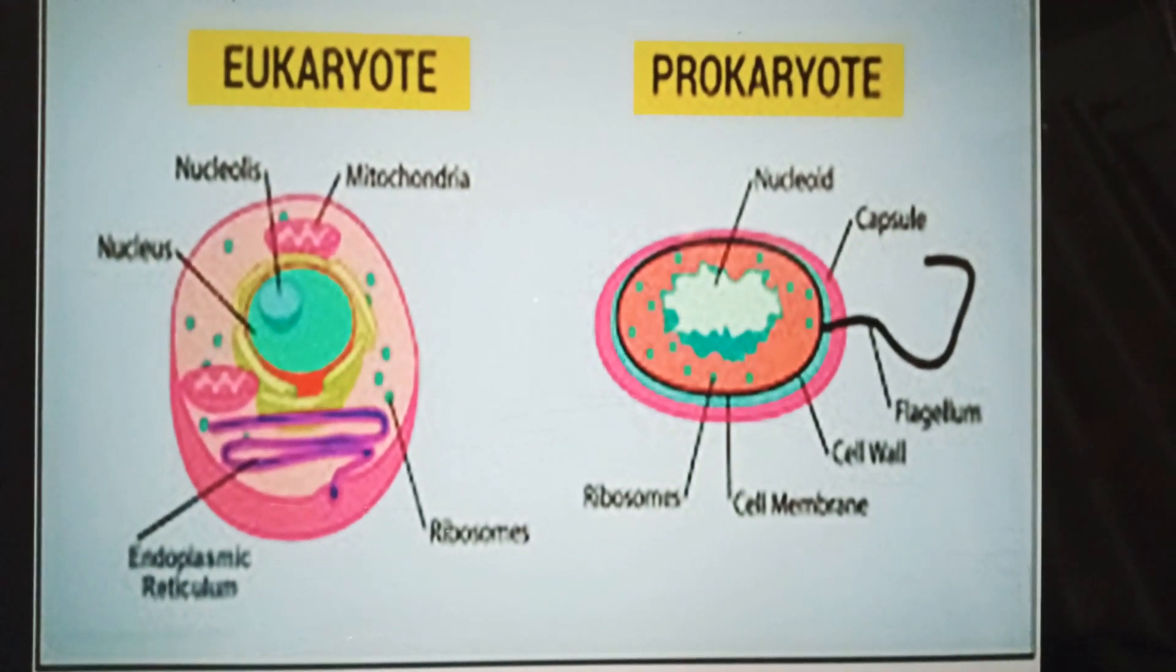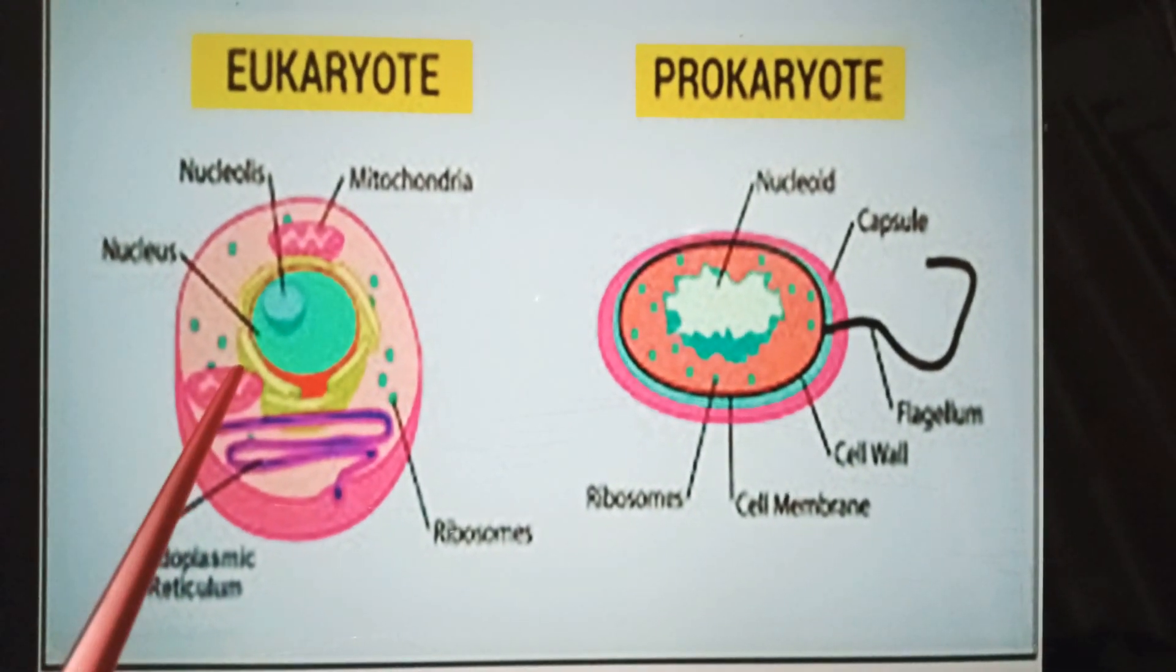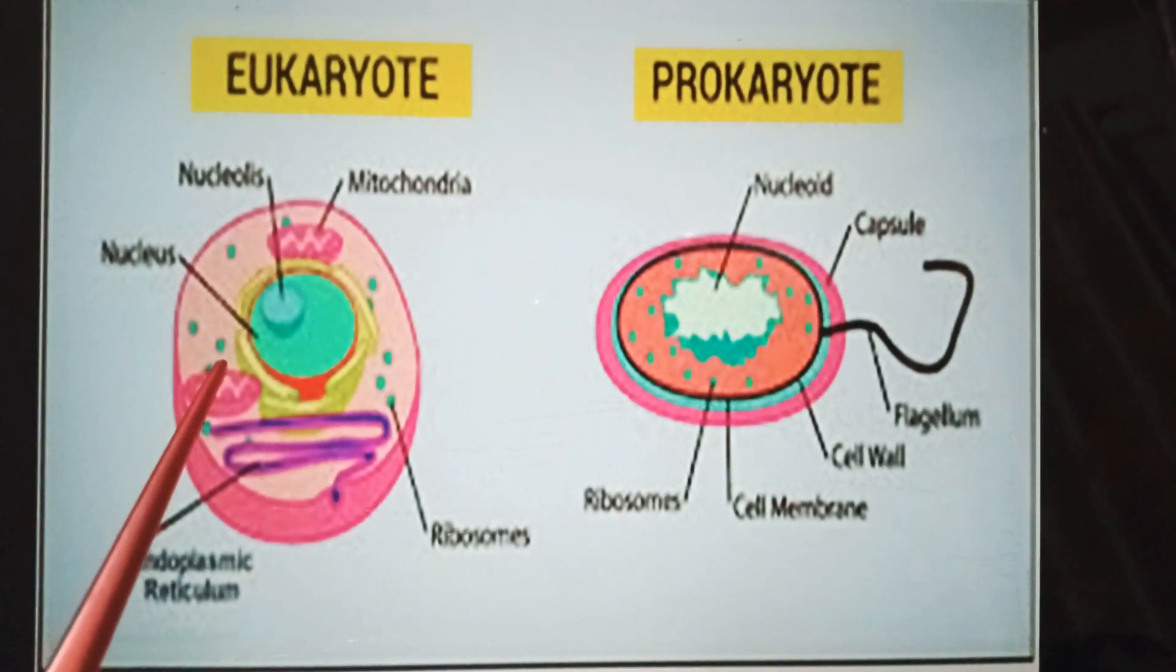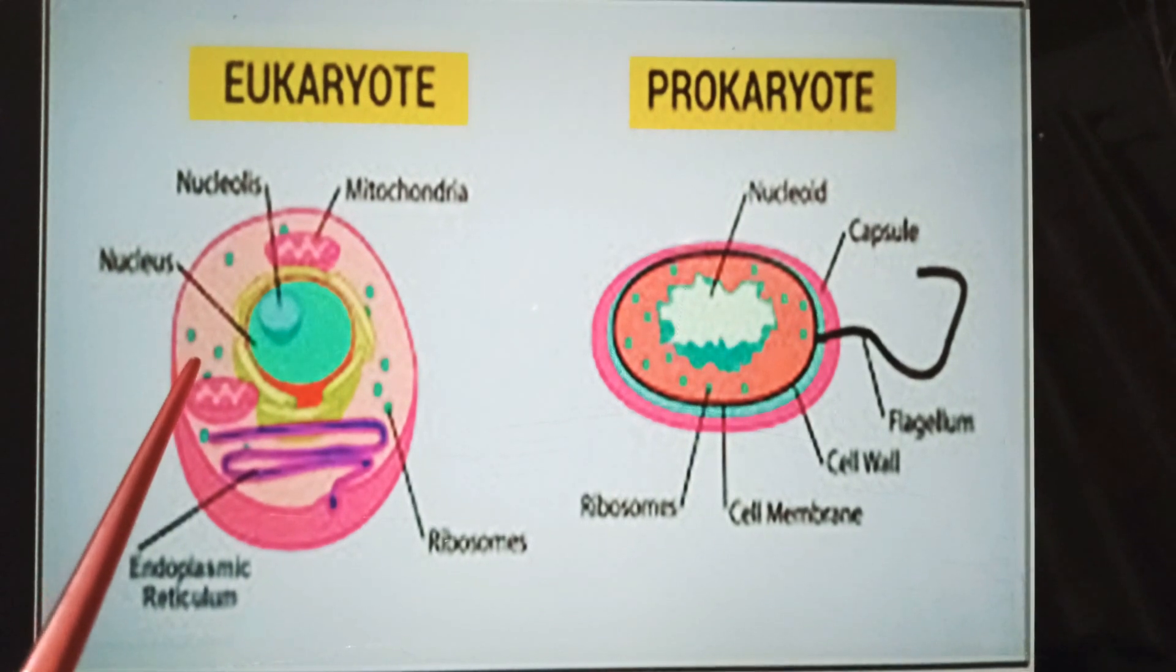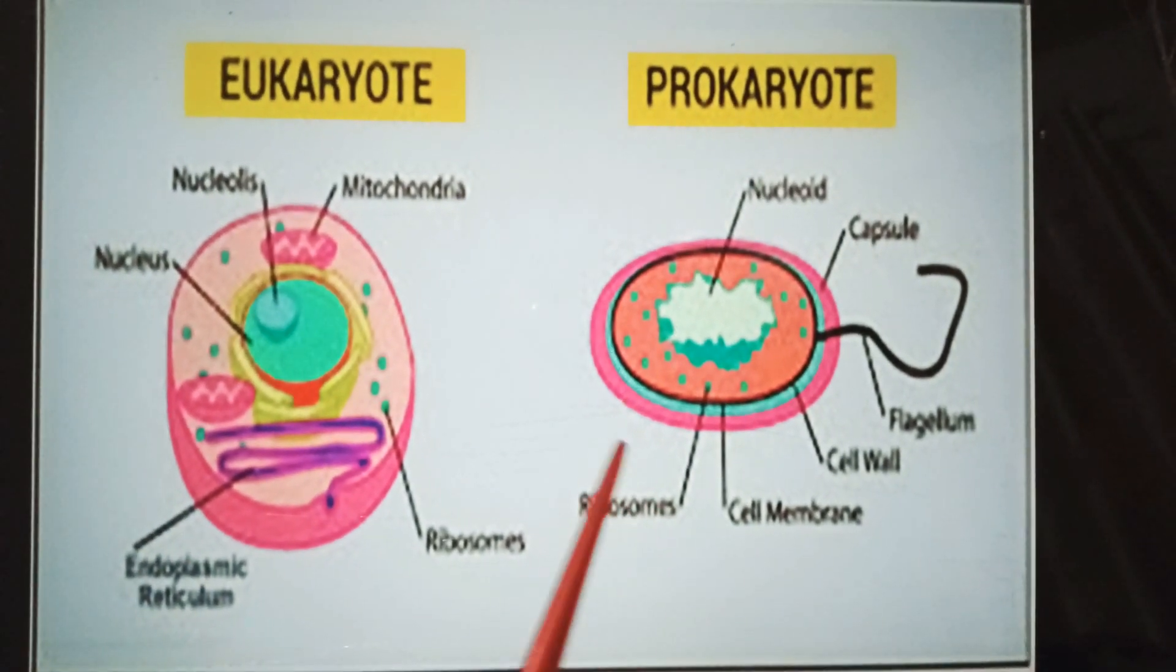Prokaryotic cells do not have prominent nucleus. Their chromosome consists of DNA only and it floats in cytoplasm.